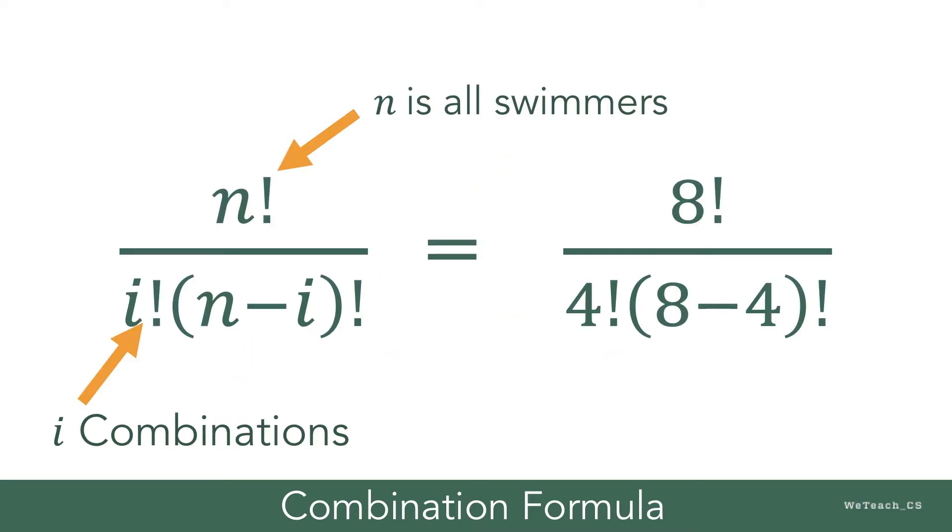If we plug in the numbers, we take the total number of swimmers, which is 8, and divide it by the number of ways we hand out our awards, which is 4.